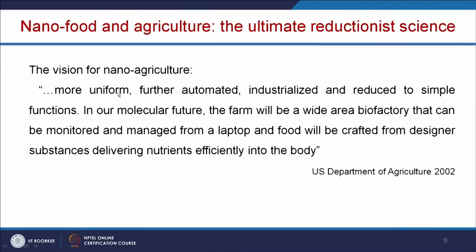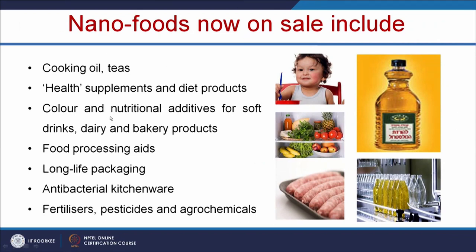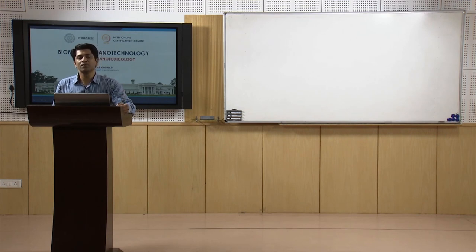Nano can also play a major role in agriculture — it can make agriculture more uniform, automated, and industrialized, though farmers may lose traditional farming knowledge. Designer substances can deliver nutrients efficiently. Nano foods on sale include cooking oils, teas, antibacterial kitchenware, food processing, and food packaging materials. Nano-based food packaging materials interact with food to prevent microbial growth, but how much nanoparticle is releasing into the food material and what happens when you consume that food is not thoroughly understood.